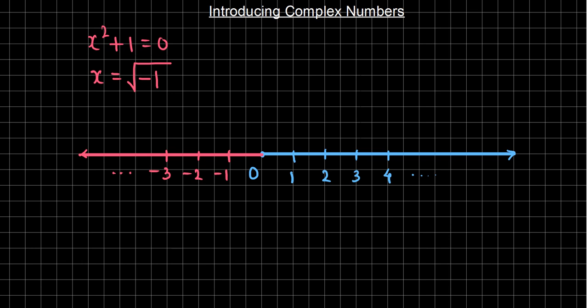Now if we try to plot this number, we have got some entity here — that is root of minus one — that is having no place on this axis. As we say that we all deal with numbers in real life, we deal with the real numbers, and these real numbers are represented on this axis with the positive numbers on the right and negative numbers on the left. But what about this number — the number that we have newly obtained, that is root of negative numbers? This root of negative numbers is having no place on this axis.